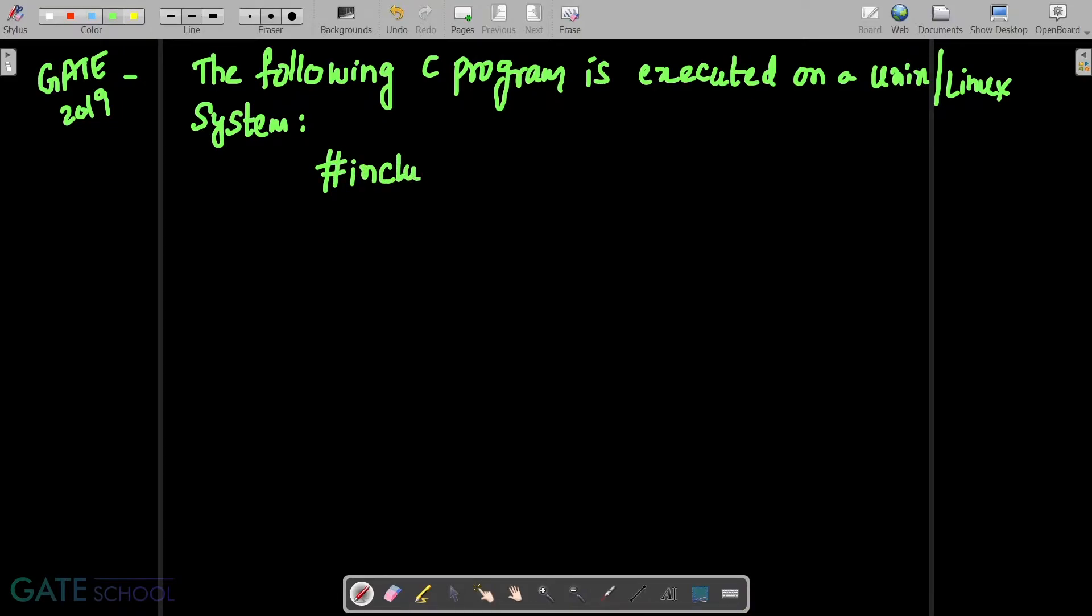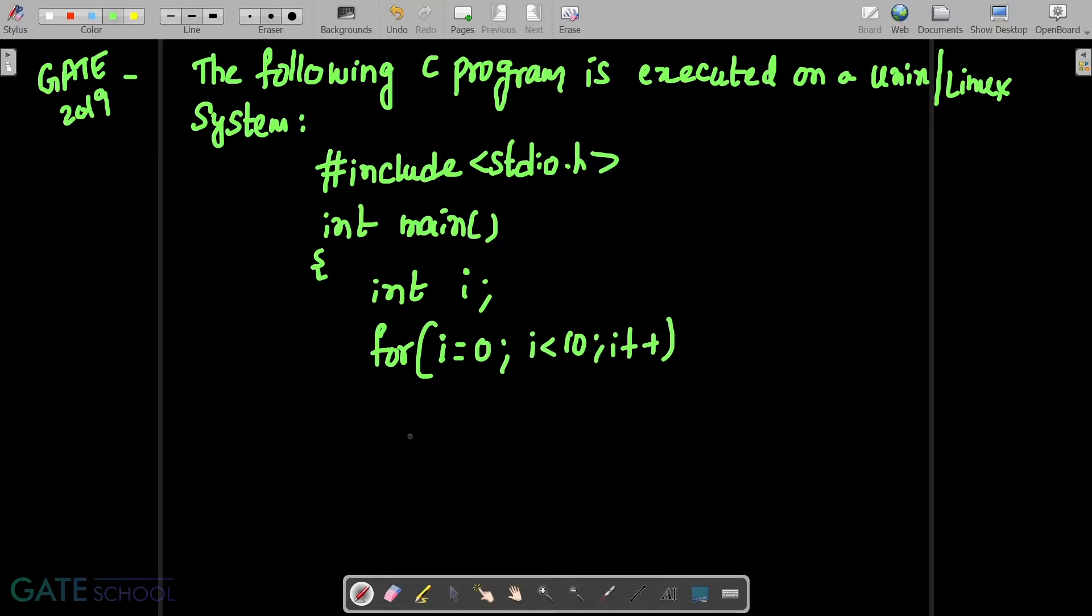#include<stdio.h> int main() { int i; for(i=0; i<10; i++) if(i%2==0) fork(); return 0; }